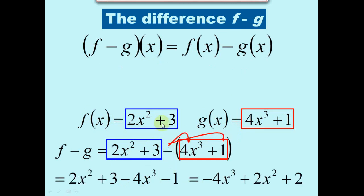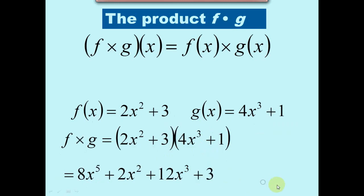When you subtract the two it's the same thing. The only thing you have to watch out for is when you have f minus g, you have to make sure that the entire g is being subtracted. When you have this function minus that function, make sure you distribute the negative into this function. A lot of people might accidentally just put negative 4x cubed. Then again you add like terms and you will end up with the final answer.